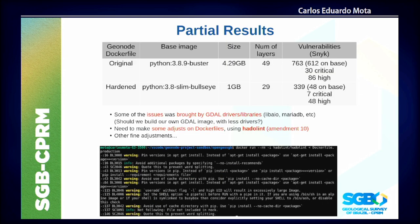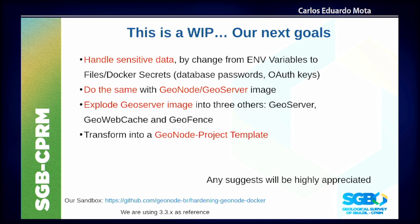The partial results obtained from these simple changes are: the image size is reduced by approximately four times, the number of layers drops from 49 to 29, and the vulnerabilities are reduced from 763 to 339. It can go even lower if we apply some linting to the Dockerfile and correct some remaining small problems. This is a work in progress for us.